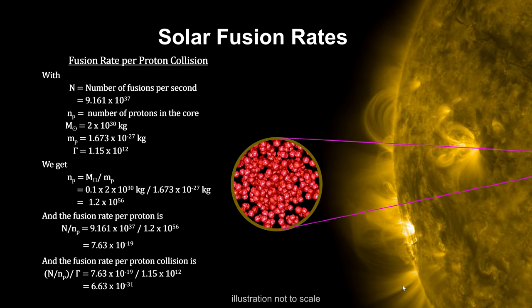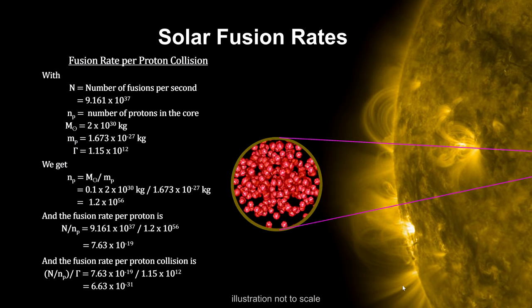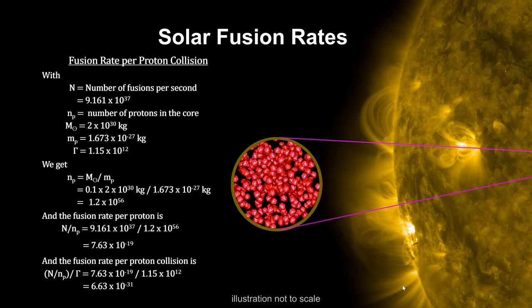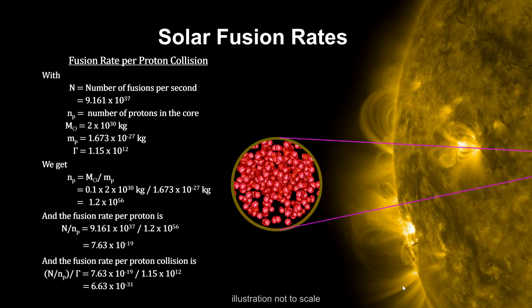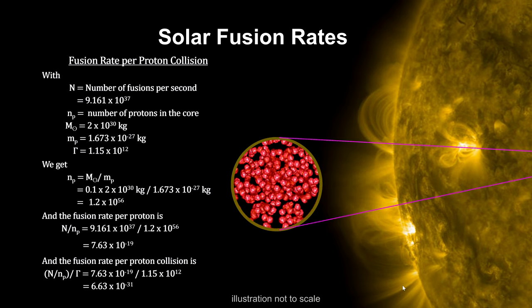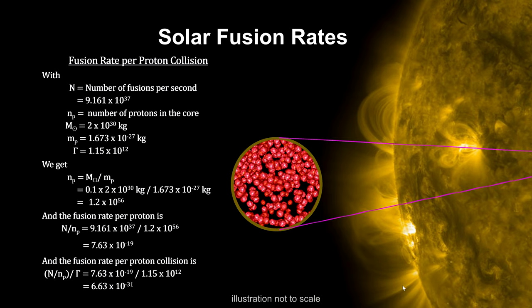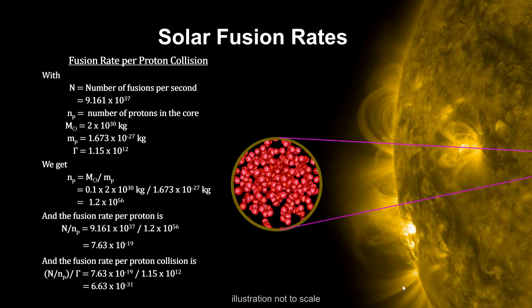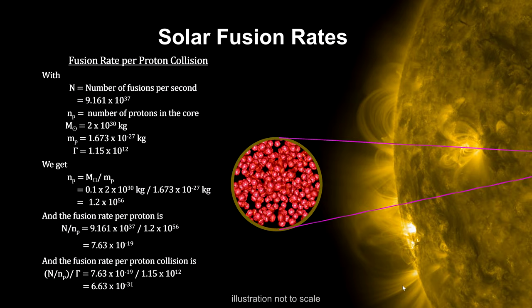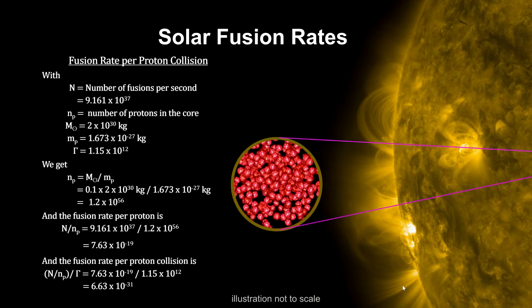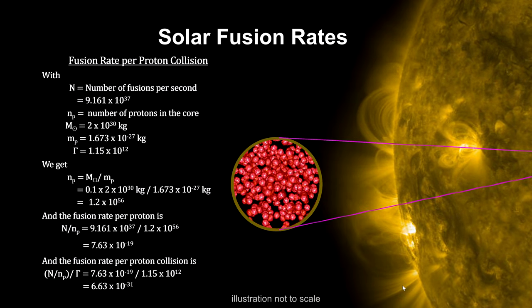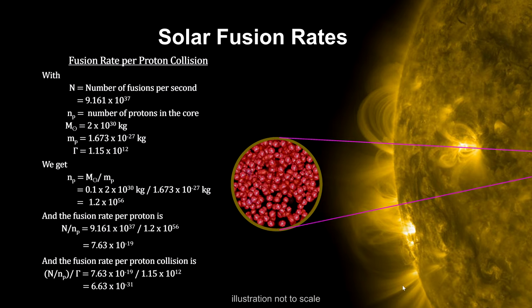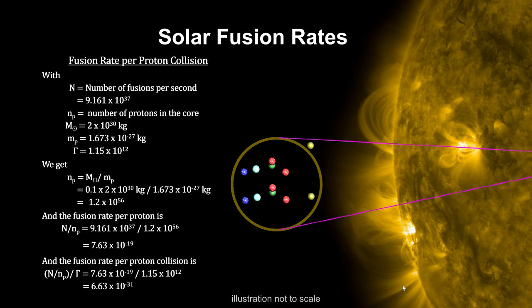And if we divide this by the trillion collisions per second, we get the number of fusions per collision. We see that the probability that any particular collision will result in a fusion is extremely small. That's why a proton's trillion collisions per second can go on for billions of years before one of them results in a fusion event.